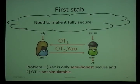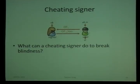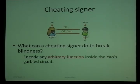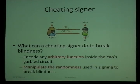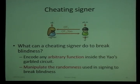We cannot live with semi-honest security because in real life there is no such thing. We need to make it fully secure. What can a cheating signer do? The goal of the cheating signer is to break blindness. The situation is actually really difficult: since Yao's construction is only semi-honest, the signer can encode an arbitrary function and make the user evaluate this arbitrary function on his message rather than the actual circuit evaluating the signature. Furthermore, the signer can manipulate the randomness used in the evaluation, affecting the randomness in the signing process, correlating it with the signature the user obtains — ultimately leading to total loss of blindness.